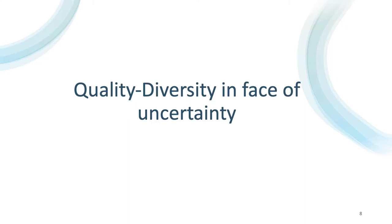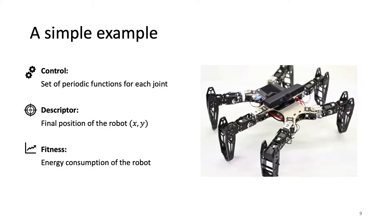One main drawback of quality diversity algorithms is their behavior in the face of uncertainty. Take the simple example of trying to learn how to control a robot, where you want to find all possible solutions that lead the robot to all points in the XY plane with the lowest possible energy consumption for each position. Your fitness is this energy consumption and the descriptor is the final position of the robot in the XY plane.